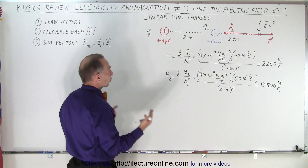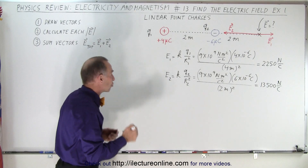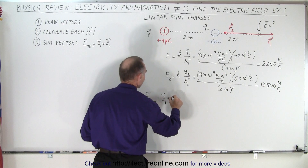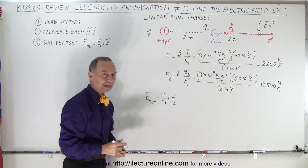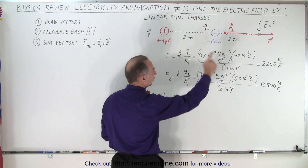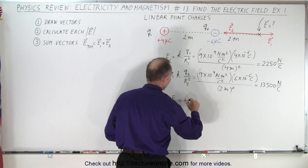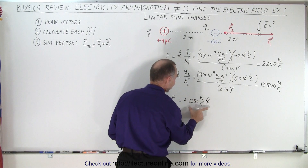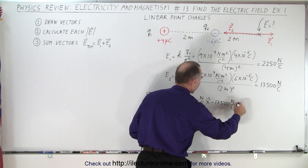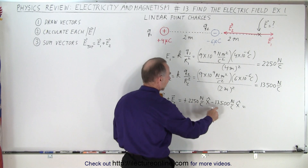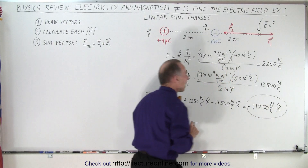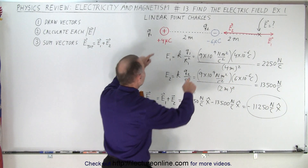Now the last step is simply to add up the vector quantities. Since we're adding vectors, we need to keep track of signs. The total electric field at the location of interest is the vector sum E1 plus E2. E1 is pointing to the right, so it's plus 2,250 newtons per coulomb in the x direction. The second one, since it's pointing to the left, is minus 13,500 newtons per coulomb in the x direction. Adding the two together, we get minus 11,250 newtons per coulomb in the x direction — that's the magnitude and direction of the total electric field at that location.